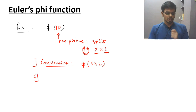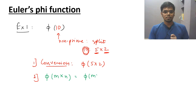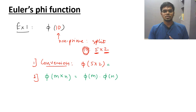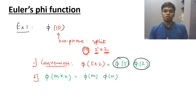Now using Euler's phi function property: phi of m times n is equal to phi of m times phi of n. So I can write phi of 10 as phi of 5 times phi of 2. These two values can be found using the formula from example one.